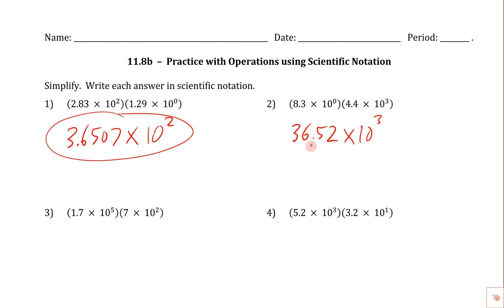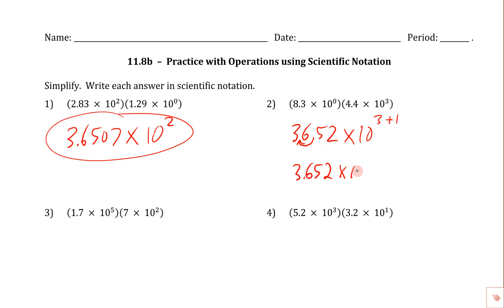Now we're going to have to adjust this — we need to move the decimal over one place. So this becomes 3.652. And because we made this number smaller, we're going to make the exponent bigger by adding one. We compensate for making the decimal number smaller by making the exponent bigger. If we move it one place smaller, we increase the exponent by one. If we had moved it over two places, we would have added two. So we end up with times 10 to the fourth. We circle that and we're done.